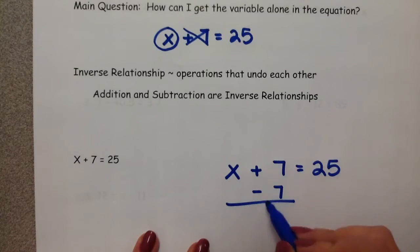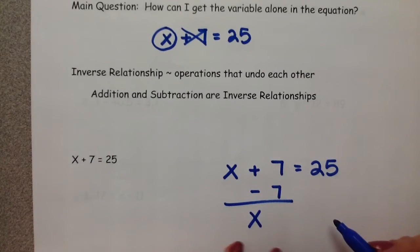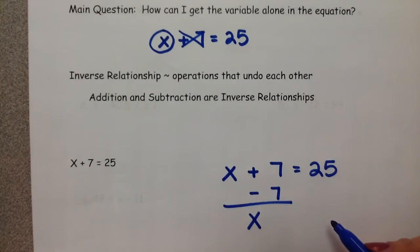That would leave us alone with our variable. But from the property of equality that we worked on yesterday, we remembered that if we take 7 away from one side, we also have to do it to the other side. And so that would get us our final answer.